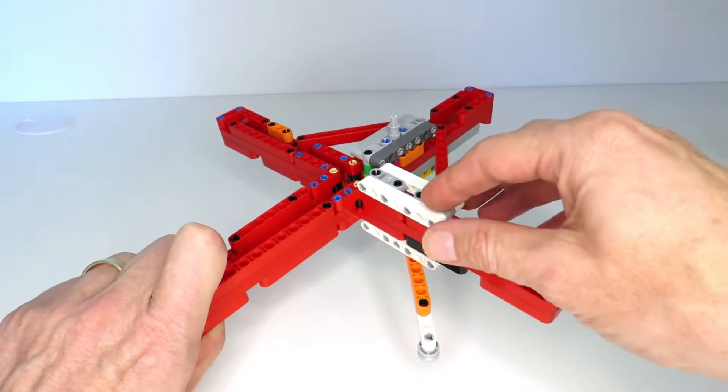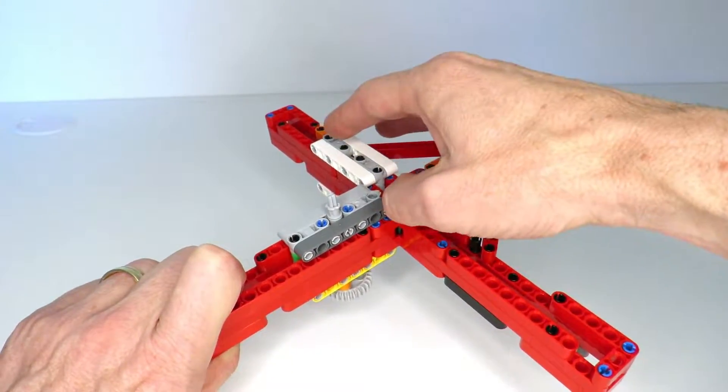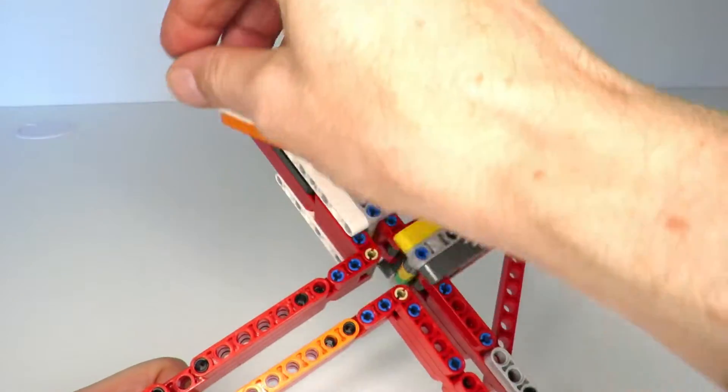If you attach a pen or pencil to this part, you'll be able to trace out an elliptical shape. So these also used to be used in fact for creating ellipses. This one here that I've got is a prototype.